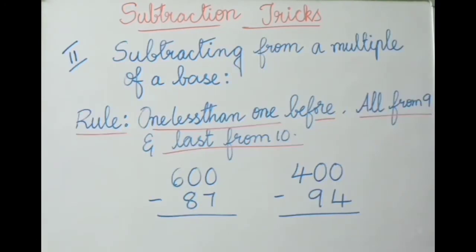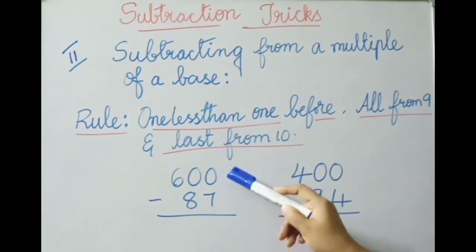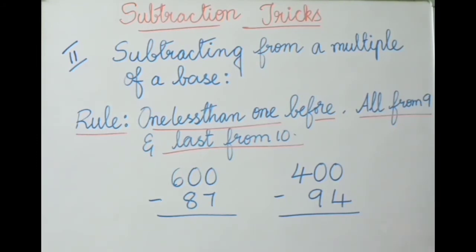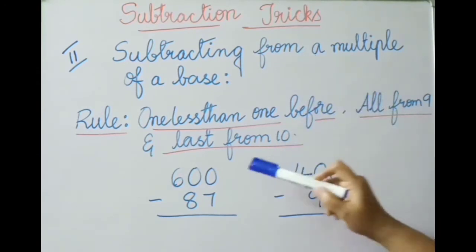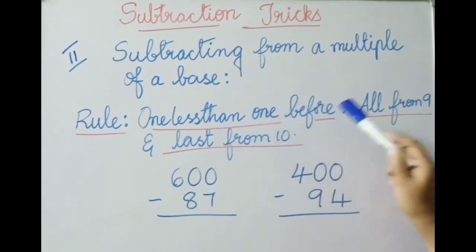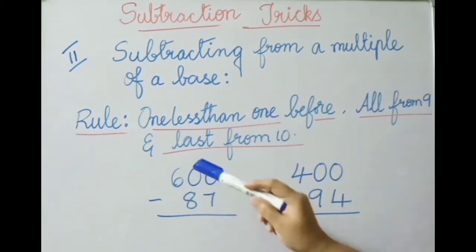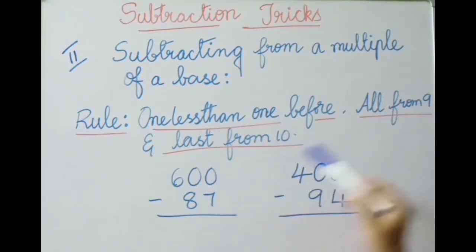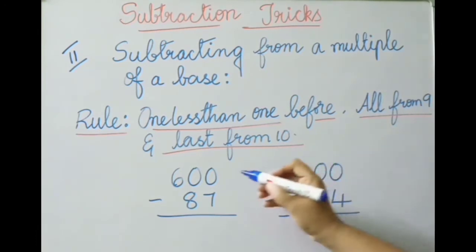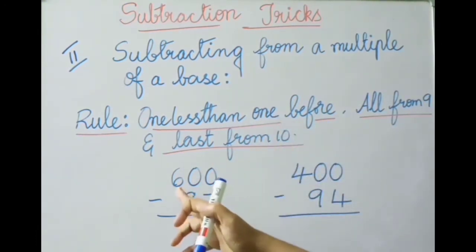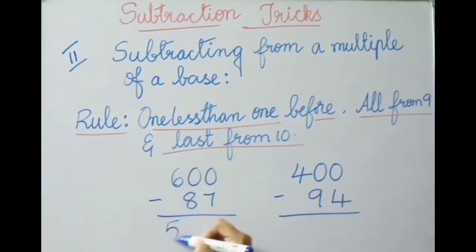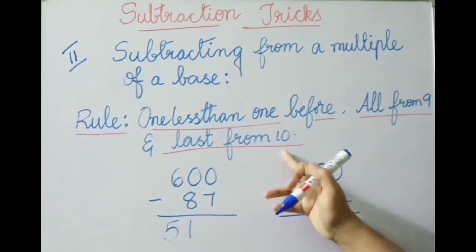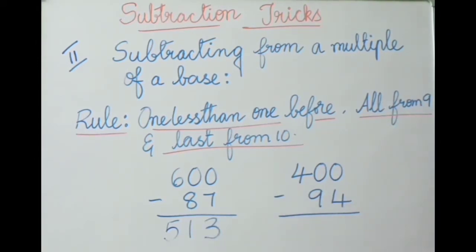Let us see the second method: subtracting from a multiple of a base. Here, six hundred is a multiple of hundred, four hundred is also a multiple of hundred. The rule to follow is: one less than the first number, then all remaining digits from nine, and the last digit from ten. For example, six hundred minus eighty-seven: one less than the first digit — six minus one is five; last from ten — ten minus seven is three. So the answer is five hundred and thirteen.